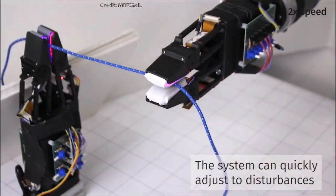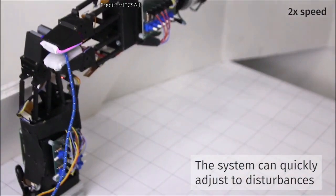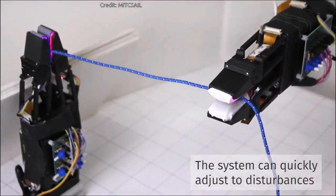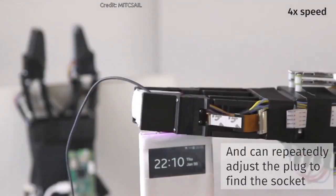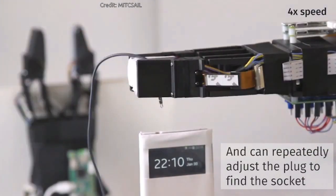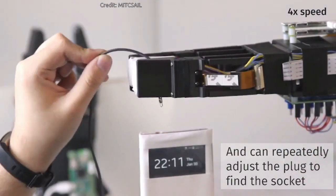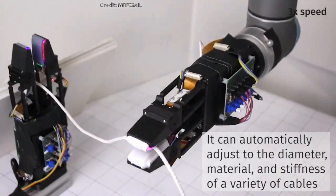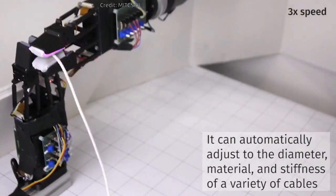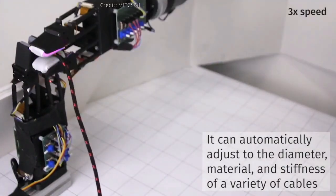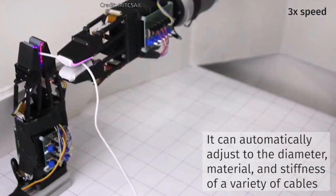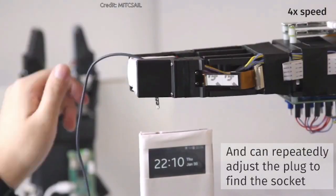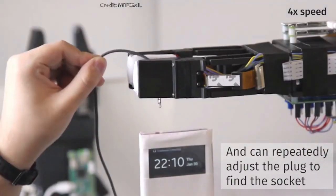As a further demo of its expertise, the robot performed an action that humans routinely do when plugging earbuds into a cell phone. Starting with a free-floating earbud cable, the robot was able to slide the cable between its fingers, stop when it felt the plug touch its fingers, adjust the plug's pose, and finally insert the plug into the jack.